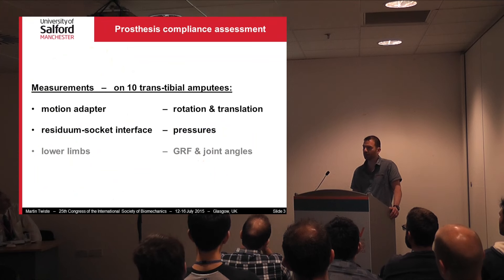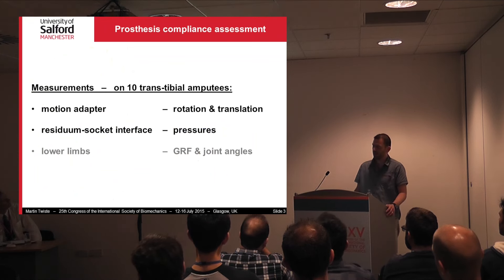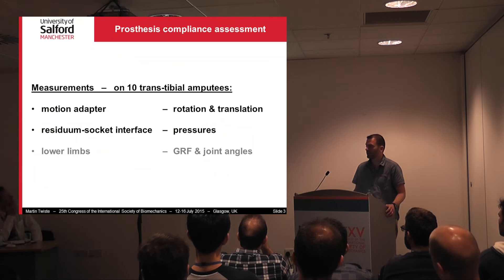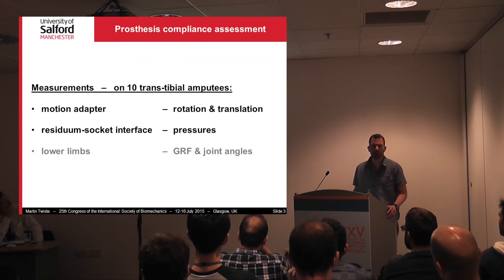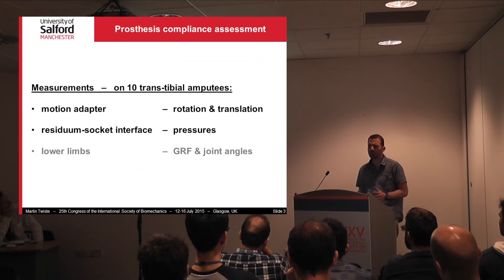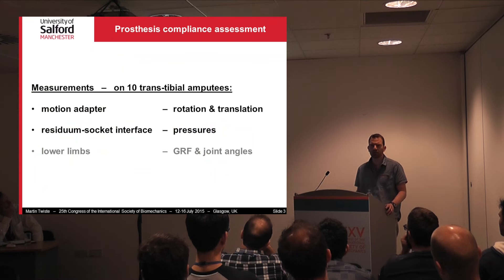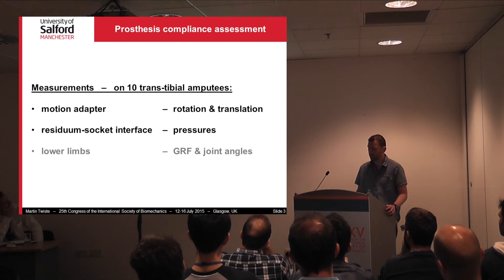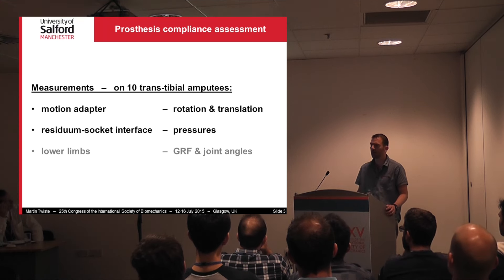That is why we conducted a study on this. We used 10 transtibial amputees and took a couple of measurements: rotation and translation measured on the motion adapter, and pressures measured at the residual-socket interface. We thought the pressure measurement would be particularly important — if the motion adapter is about tracking motion of the residual in the transverse plane and about shock absorption, it should have some beneficial effect on in-socket pressures. We also captured ground reaction forces and joint angles and calculated inverse dynamics.